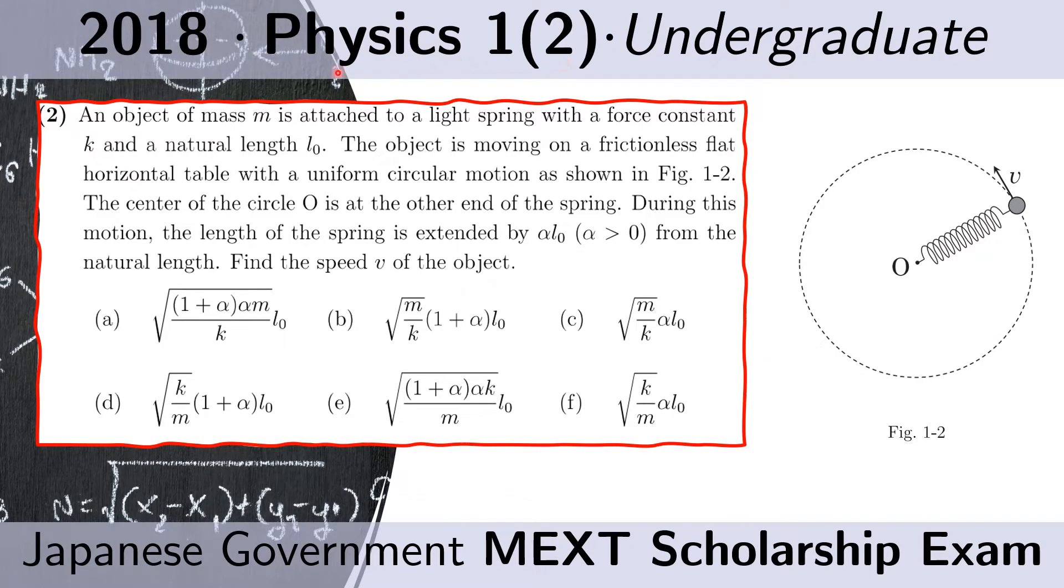Problem 2 of 1. An object of mass M is attached to a light spring with a force constant K and a natural length L sub 0. The object is moving on a frictionless flat horizontal table with a uniform circular motion as shown in this figure. The center of the circle O is at the other end of the spring.